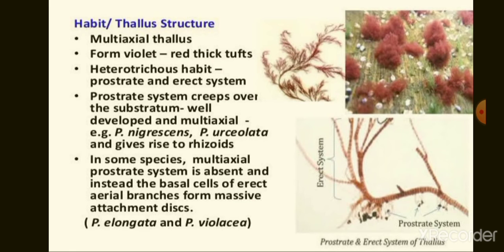Next, thallus structure of Polysiphonia. The plant body is red or dark blue colored. It is axial in habit and few centimeters to several inches in length. The plant body is heterotrichous, meaning it is differentiated into a basal prostrate system and an aerial erect system.